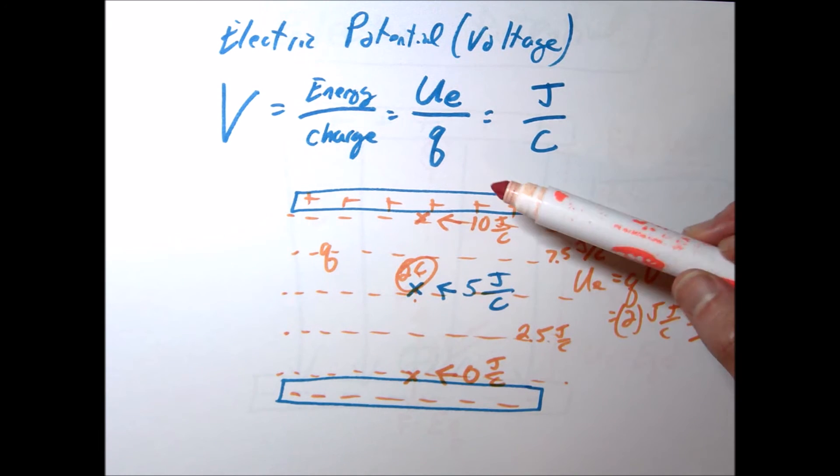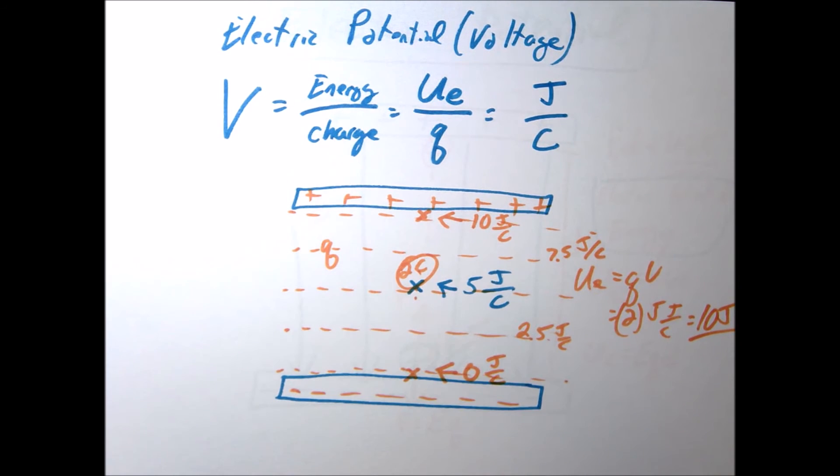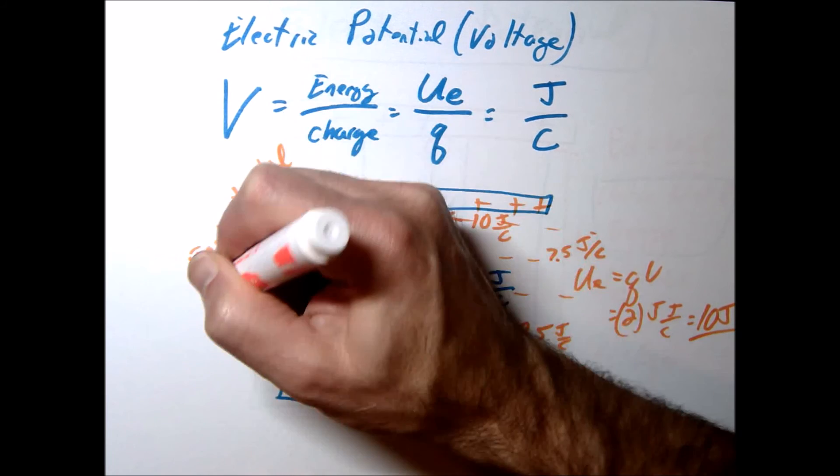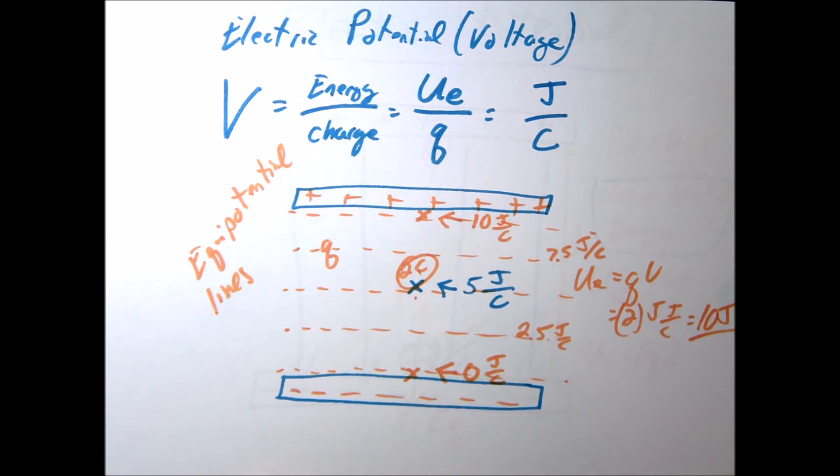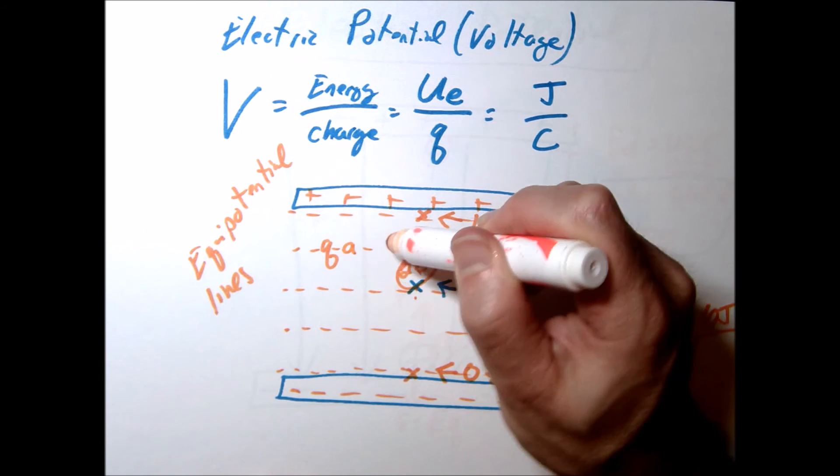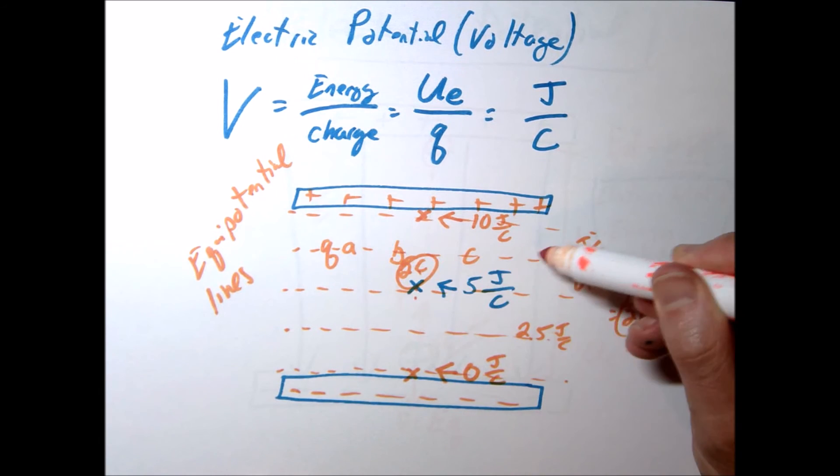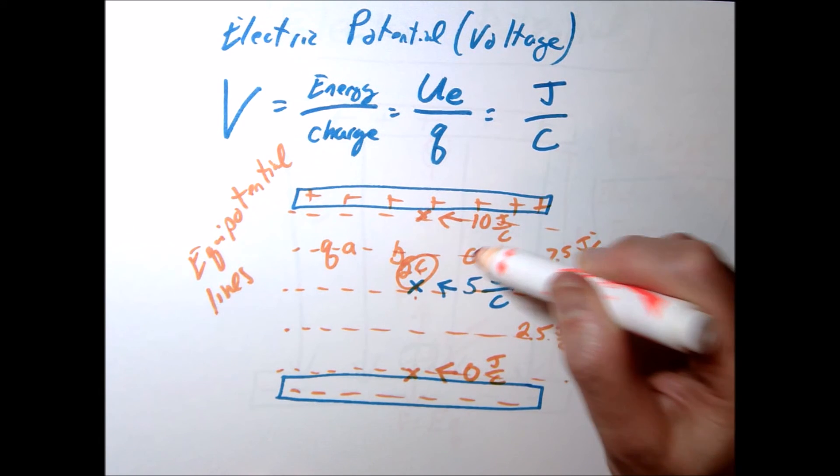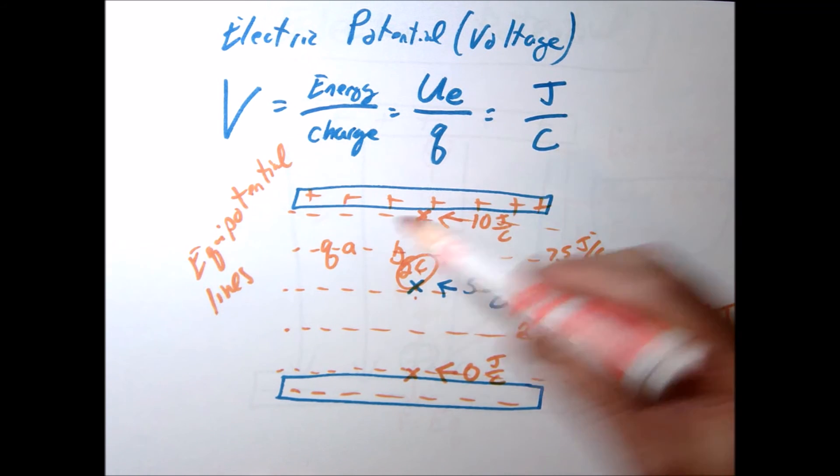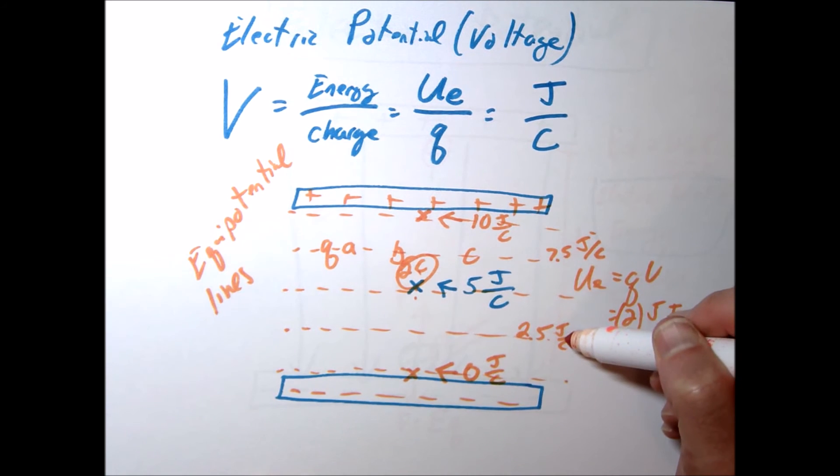But irrespective of whether there's a charge there or not, there's still going to be some electric potential. So these little lines right here, by the way, these are called equipotential lines, these dotted lines that I drew here. And essentially, that means that everywhere along this single dotted line, let's say A, B, or C, everywhere along there, a charge placed there is going to have 7.5 joules per coulomb of electric potential. And down here, it's going to have 2.5 joules per coulomb of electric potential, and so forth.